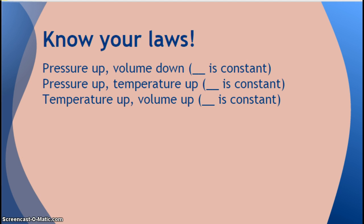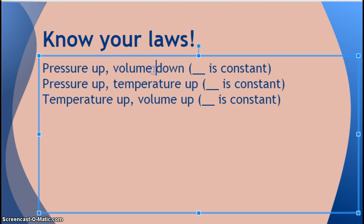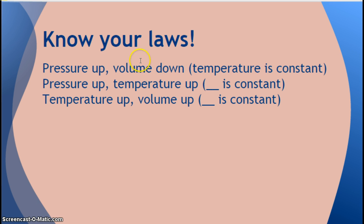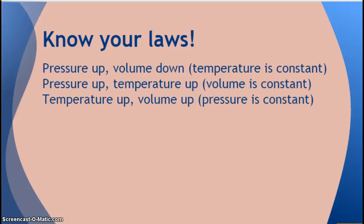Now I said blank is constant. So I mentioned this very briefly before, but I want to make sure that I say it again. If I'm changing pressure and volume, what thing am I assuming is the same? I'm assuming the temperature is the same because it's not anywhere in our math problem. So if I'm changing pressure and temperature, now what do I assume is constant or stays the same? Now I assume the volume is constant because it's not part of my math equation. So if I'm changing temperature and volume, what is constant? The pressure.